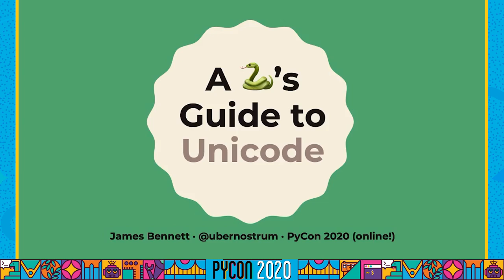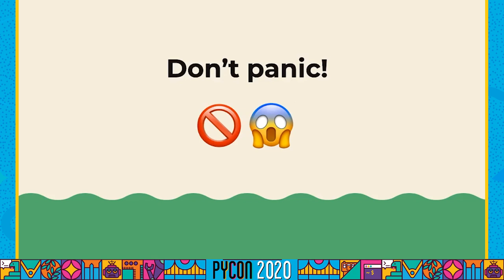Hi, I'm James, and I'm here today to talk to you about Unicode. I know that word can provoke some reactions in people, but Unicode is complex, and I'm sure you've heard scary stories about it. It's not something you have to be afraid of, and by the end of this talk I hope you'll understand where Unicode came from, what it is, how it works, how it gets implemented in programming languages like Python, and how you can manage that complexity and write more effective, confident code.